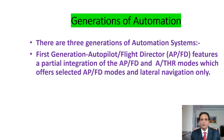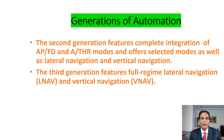Let's now have a look at the generations of automation. There are three generations of automation systems. The first generation autopilot/flight director features a partial integration of the autopilot/flight director and autothrottle modes, which offers selected autopilot/flight director modes and lateral navigation only. The second generation features complete integration of autopilot/flight director and autothrottle modes, and offers selected modes as well as lateral navigation and vertical navigation. The third generation features full-regime lateral navigation and vertical navigation.